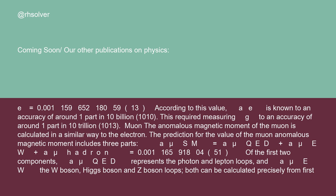The anomalous magnetic moment of the muon is calculated in a similar way to the electron. The prediction for the value of the muon anomalous magnetic moment includes three parts: a_μ^SM equals a_μ^QED plus a_μ^EW plus a_μ^hadron equals 0.000116598045.